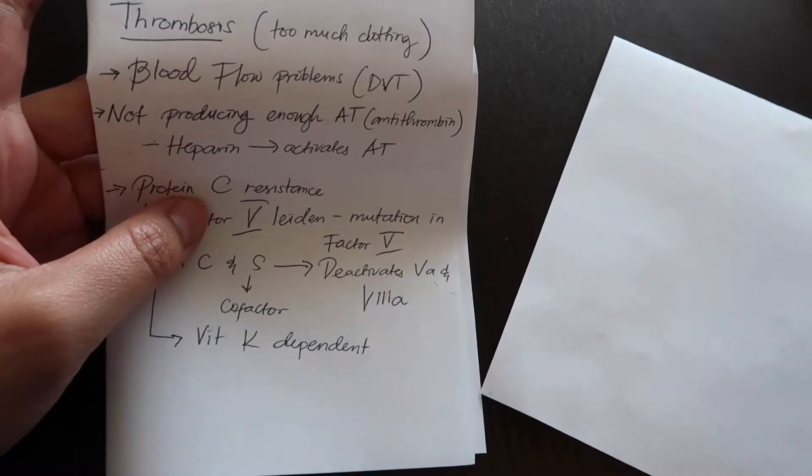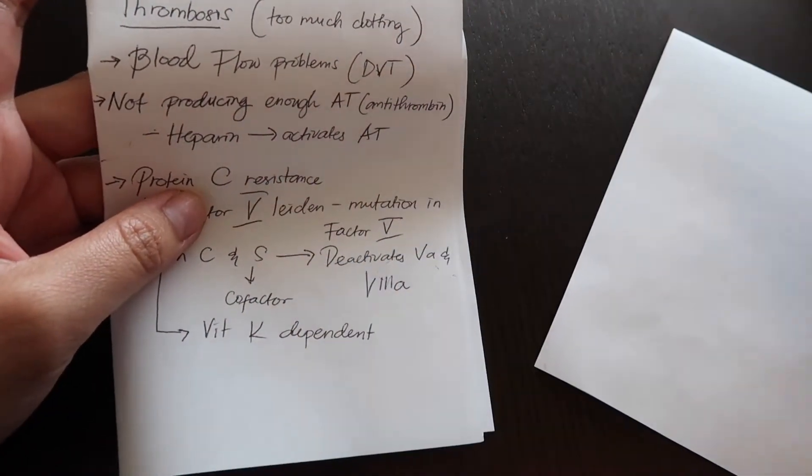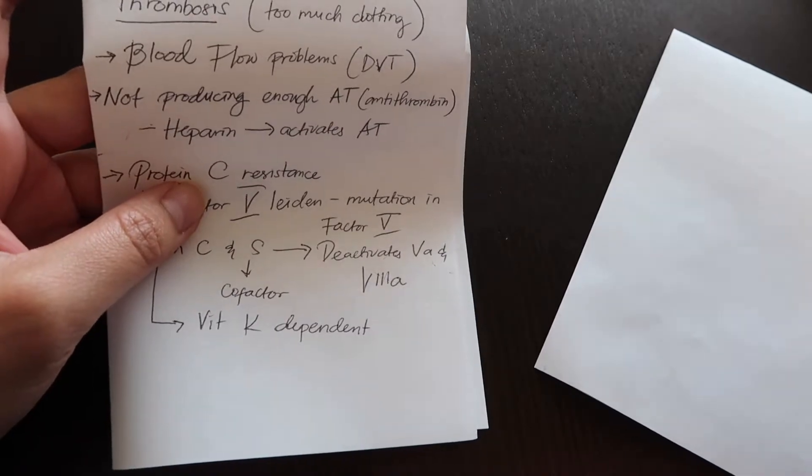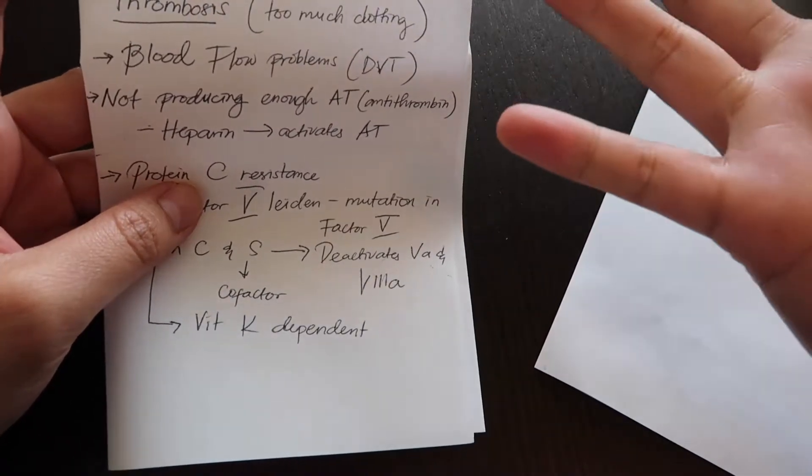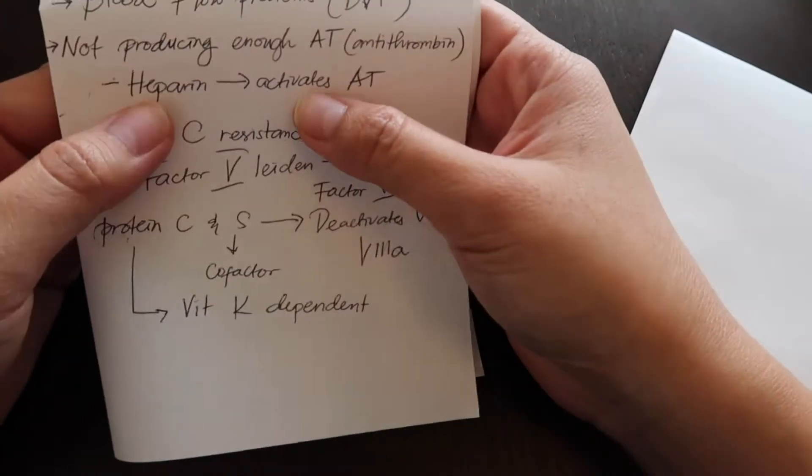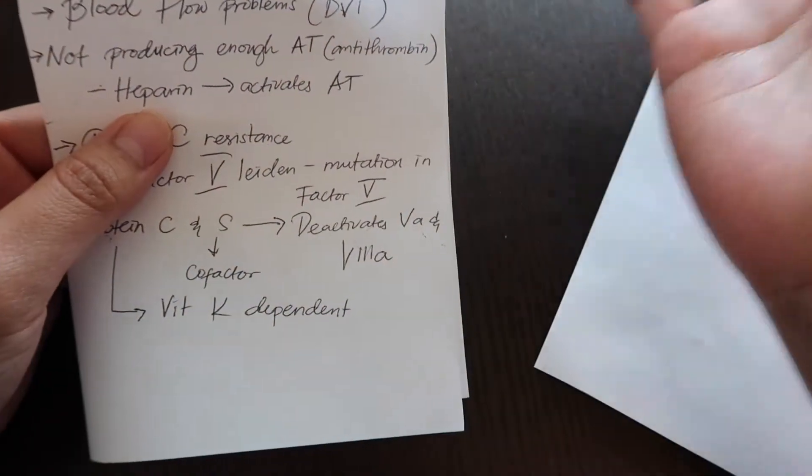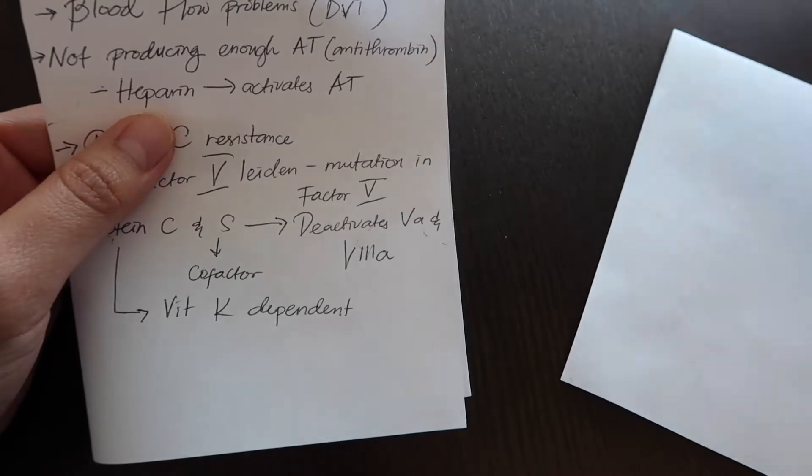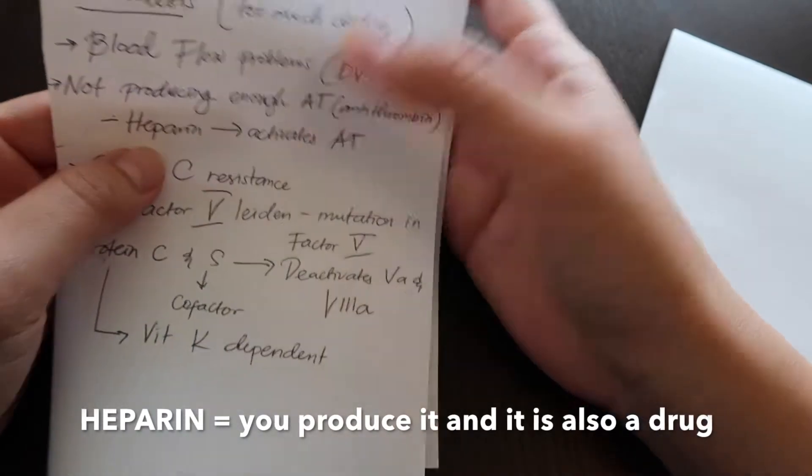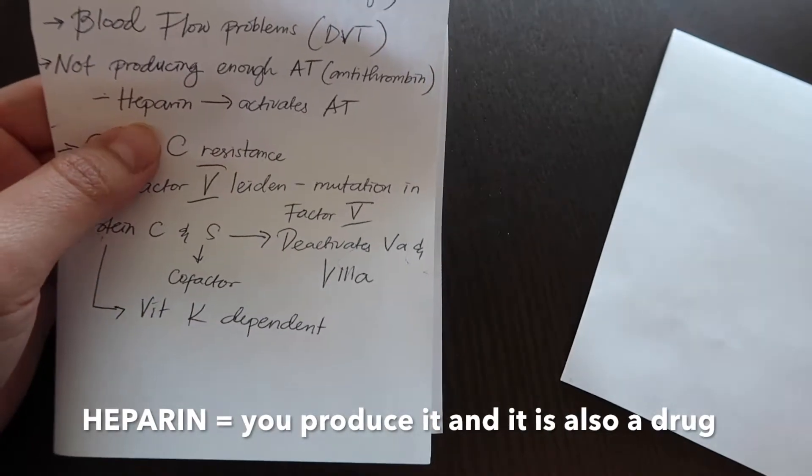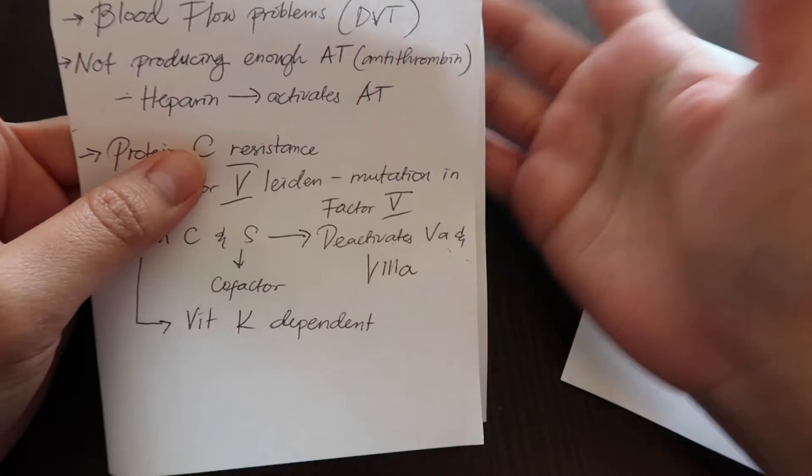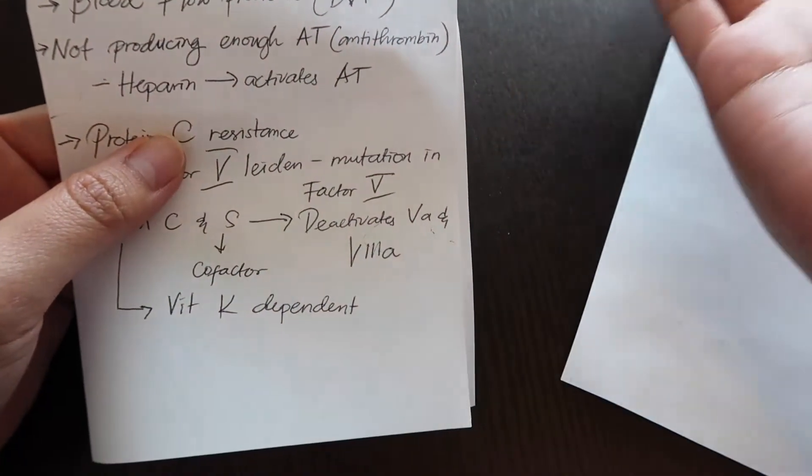Heparin we actually produce in our body. It activates antithrombin and makes sure that thrombin gets controlled. The amount of thrombin in your body gets controlled. Heparin helps people to not coagulate. It's an anticoagulant drug that is helpful for people that clot too much, like for old people. This is heparin therapy.